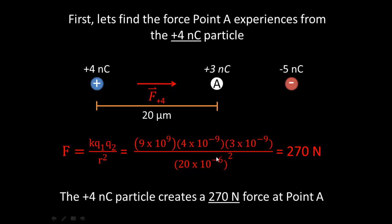A quick reminder: notice that I changed these to standard units. Even though the charges are given in nanocoulombs, I converted them to Coulombs — nano is 10 to the negative 9th power. And the distance was in micrometers, so I converted that as well — micro is 10 to the minus 6th power. Be careful with those unit conversions, as they can get tricky fast.